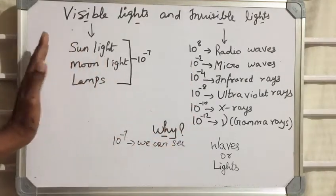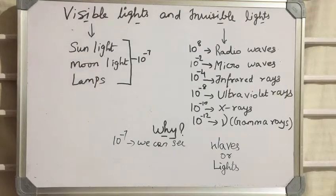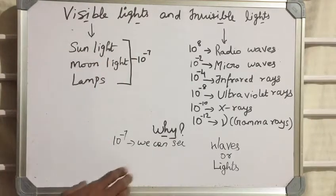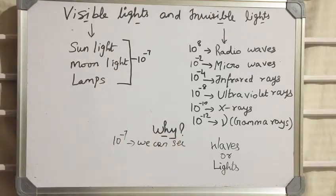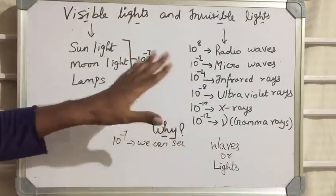This thing we have, whereas in visible lights, we have 10 to the power of minus 7. So the rays which have 10 to the power of minus 7, we can see it, whereas the ranges which we have different here, we cannot see.